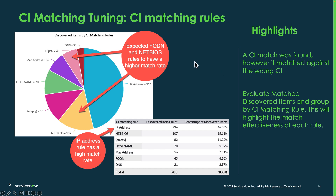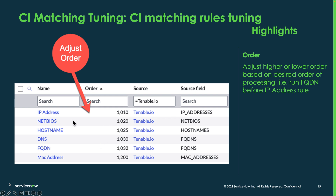The reporting feature gives you the ability to see the spread of how your CI matching rules are performing. You can see FQDN and NetBIOS — I would expect these to have a higher match rate than IP address. So we may need to take a look at the IP address rule. The first thing I would look at is the order — you can see the order of IP addresses is first, but it probably should be last. You should probably be targeting FQDN and NetBIOS before IP address. In general, you should always have more granular rules evaluated first, and then more broad rules further down.